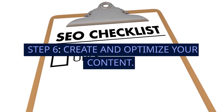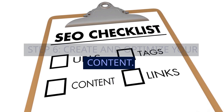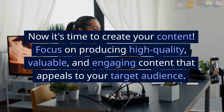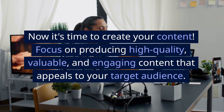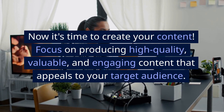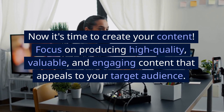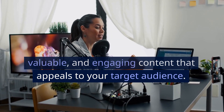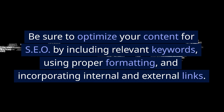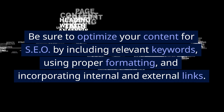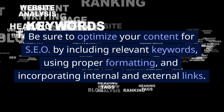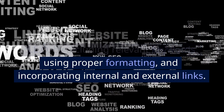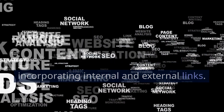Step 6: Create and Optimize Your Content. Now it's time to create your content. Focus on producing high-quality, valuable, and engaging content that appeals to your target audience. Be sure to optimize your content for SEO by including relevant keywords, using proper formatting, and incorporating internal and external links.